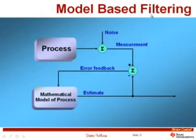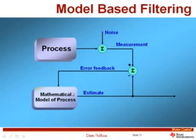Using a resolver or encoder to get rotor flux angle is expensive, yet as we've seen, that angle is absolutely critical for FOC. We need a way to get that information without a shaft sensor. This leads to a discussion of model-based filtering: we have a process generating a signal, but that signal is buried inside the machine or contaminated with noise. We build a mathematical model of the process, generate an estimate of the signal, compare it to the measurement, generate an error signal, and use that to correct our model on the next iteration.